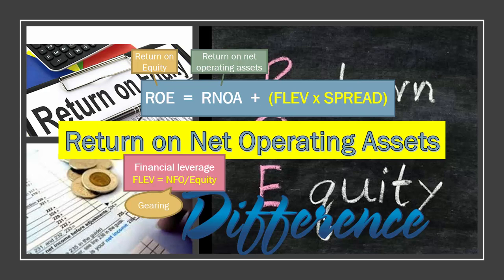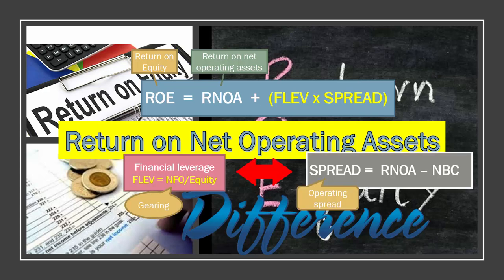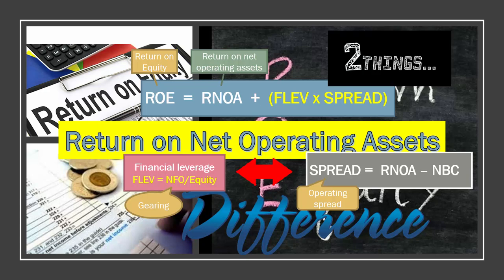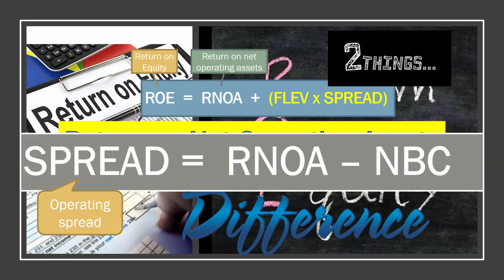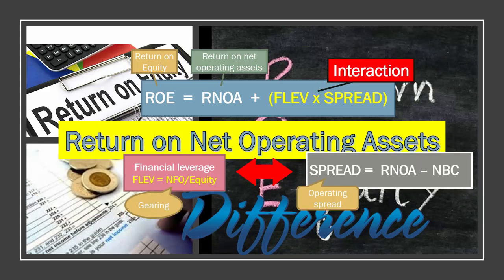That is the interaction of financial leverage and spread. It is driven by two things working together, only one of which is financial leverage. Operating spread is the difference between the return the firm can generate on its net operating assets (RNOA) and its net borrowing cost (NBC). The greater a firm's spread, the greater the leverage equity investors gain in terms of increased return on equity for each dollar of net financial obligations introduced into the firm. In this way, leverage between a firm's return on equity and return on net operating assets depends on the interaction between FLEV and spread — between a firm's level of borrowings and the profitability of its operations compared to its cost of borrowing. It is both working together that levers return on equity compared to return on net operating assets.